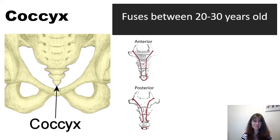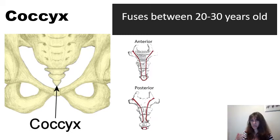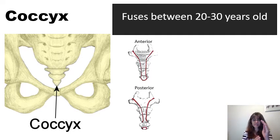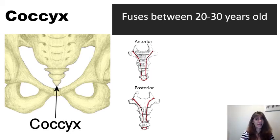The coccyx is the most inferior bone in the axial skeleton. It fuses from four vertebrae, and this fusion occurs between 20 and 30 years of age. Some people refer to this as the tailbone — if you've ever fallen on yours accidentally, it can hurt for quite a while. These can break; if they break, they tend to break anteriorly when people fall, and that can be resolved, though it's not a pleasant resolution.